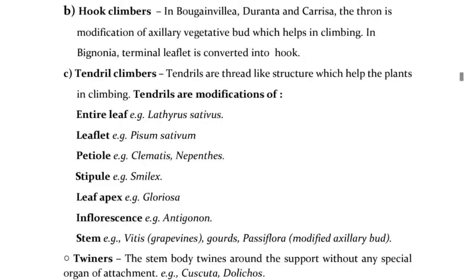C. Tendril climbers — tendrils are thread-like structures which help the plants in climbing. Tendrils are modifications of entire leaf (e.g., Lathyrus sativus), leaflet (e.g., Pisum sativum), petiole (e.g., Clematis, Nepenthes), stipule (e.g., Smilax), leaf apex (e.g., Gloriosa), inflorescence (e.g., Antigonon), stem (e.g., Vitis/grapevine, Passiflora), and modified axillary bud. D. Twinners — the stem body twines around the support without any special organ of attachment, e.g., Cuscuta, Dolichos.